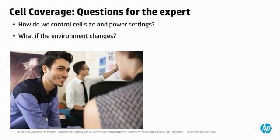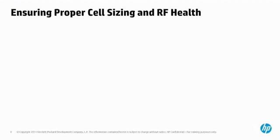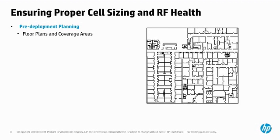Proper cell size and power settings are important to RF health — but how do we control these power settings, and when the environment changes, how do we ensure continued end-user satisfaction? Healthy RF environments start with good planning. You need to gather floor plans and meet with stakeholders about coverage areas. For instance, bathroom facilities, elevator shafts, and mechanical rooms do not often require WLAN service — mark out those areas.